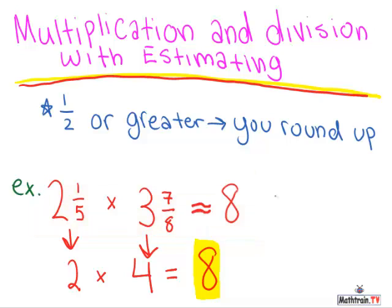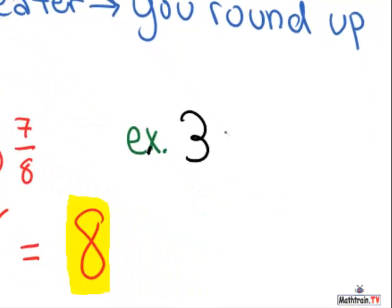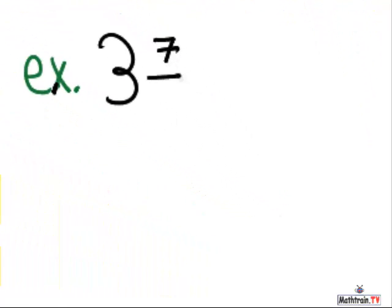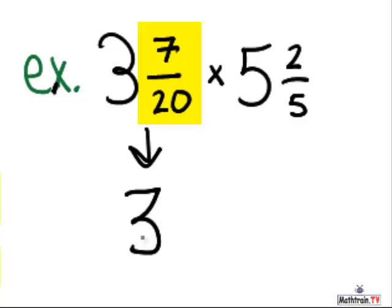Let's do one more example. Let's take 3 and 7 twentieths times 5 and 2 fifths. 7 twentieths is less than 1 half, so you round that down to 3.